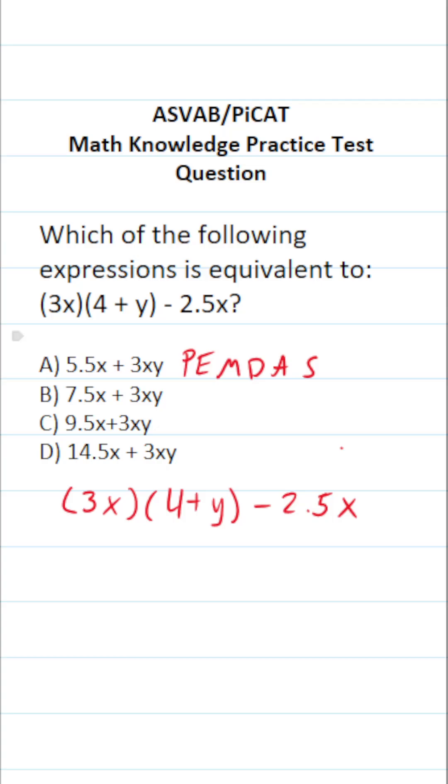You do parentheses first, exponents next, multiplication and division as they appear in the expression from left to right—that is to say they're treated as equals—and then finally addition and subtraction as they appear in the expression from left to right.